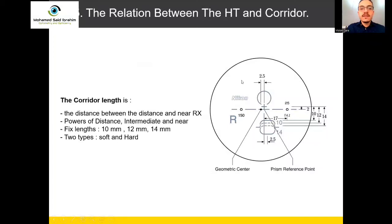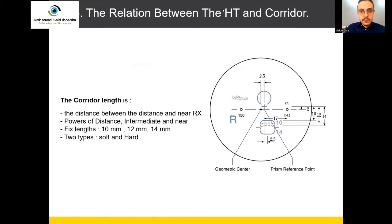The last topic: what is the relation between the height and the corridor? First of all, we should define the corridor lens. The corridor lens is from the cross here — let's make a marking — from this cross until the start of the area of vision.